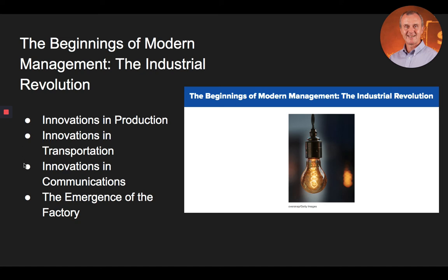Communication innovations during the Industrial Revolution include the development of Morse code — a system of dots and dashes transmitted electronically using the telegraph — and the use of the telegraph by companies to coordinate multiple business units over large distances in a timely manner. Other innovations include the invention of the telephone, which allowed the exchange of verbal language in a give-and-take manner, and the early development of wireless technology to send messages via Morse code over radio waves.